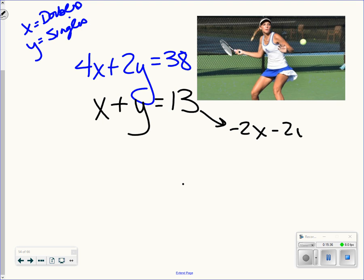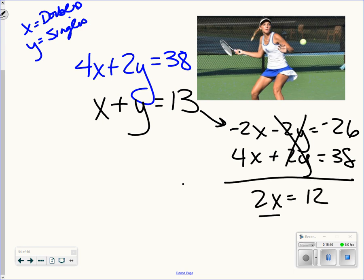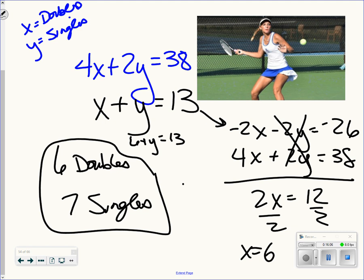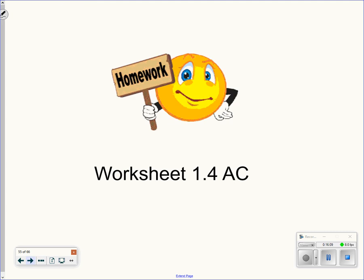I'm going to multiply the bottom equation by negative 2. So negative 2x, negative 2y, negative 26. I'm going to leave the top equation alone. That eliminates the y and solve. So there are 6 doubles matches occurring. So if there are 6 doubles, then I plug 6 back in. 6 plus y equals 13. So there's 7 singles. Your homework assignment tonight is going to be a worksheet. If you have any questions, make sure you talk to your teacher. And good luck. Thank you.